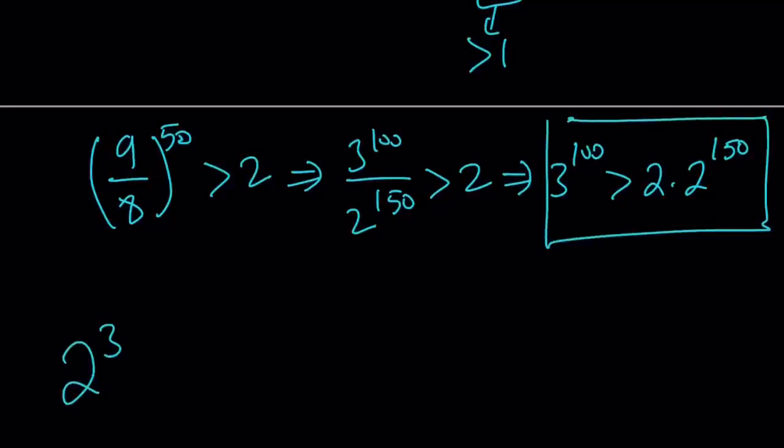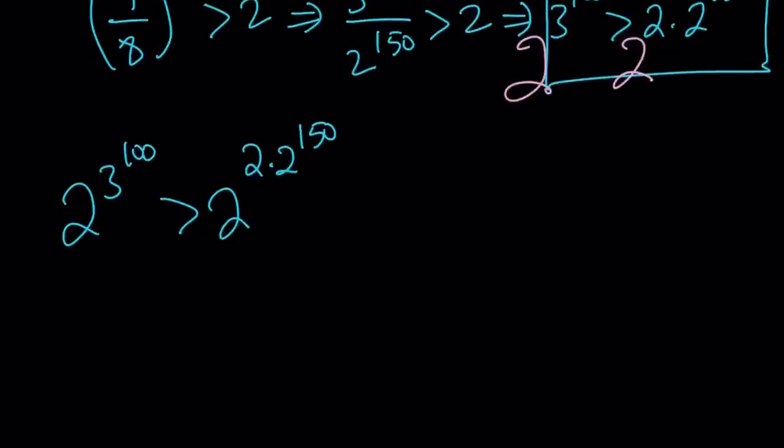2 to the power 3 to the power 100 is greater than 2 to the power 2 times 2 to the power 150. In other words, I'm doing 2 to the power both sides. If this is true, then that is true. From here, we get something interesting because the 2 can be taken inside and we can leave the 2 to the power 150 outside. Then 2 to the second power is 4.